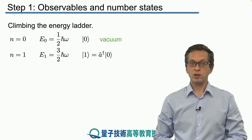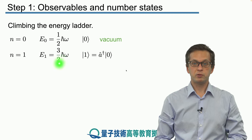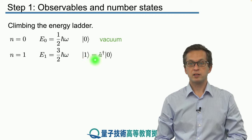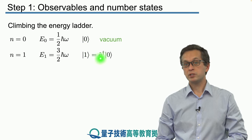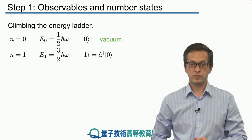If we increase n by one, so n = 1, our energy goes up to (3/2)ℏω. The corresponding state is denoted by |1⟩, which can be obtained from the vacuum by applying the creation operator once: |1⟩ = A†|0⟩.